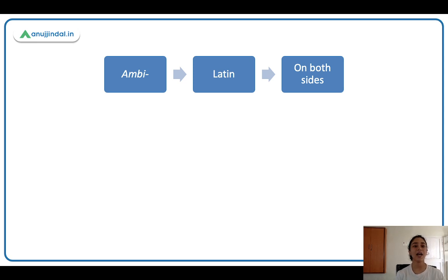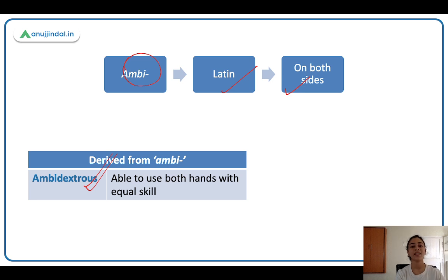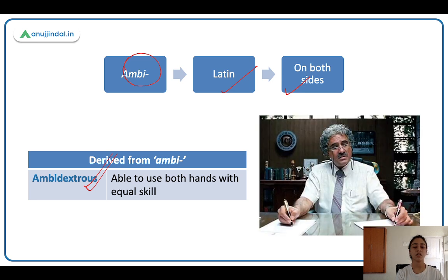From 'ambi' comes another English word: ambidextrous — meaning able to use both hands with equal skill. A famous example is Virus from the movie Three Idiots, who could write with both hands. Ambidextrous has both Latin and French roots. The 'dextrous' part comes from Latin 'dexter,' meaning right hand. The left hand in Latin is 'sinister.' In French, right hand is 'droit' and left hand is 'gauche.'